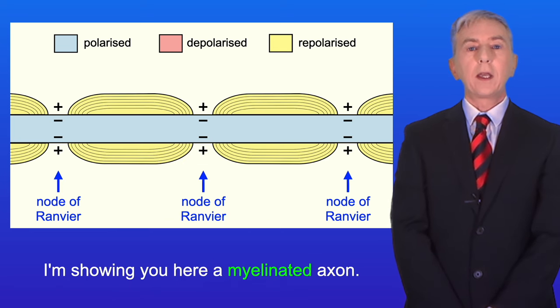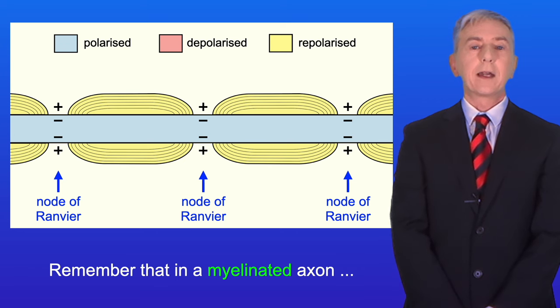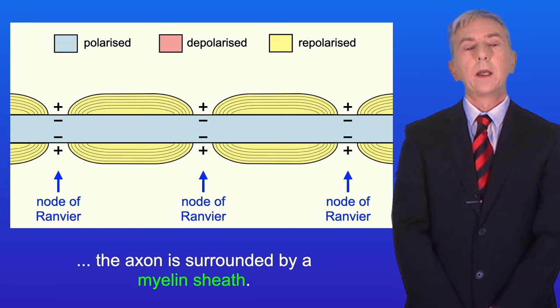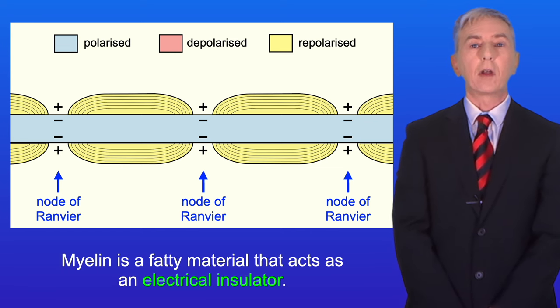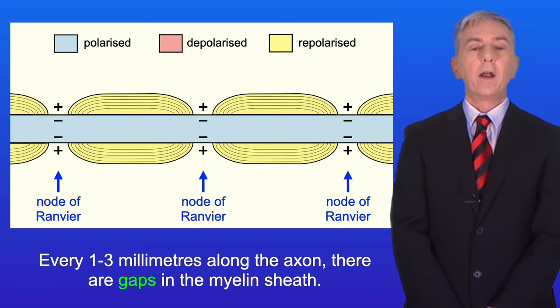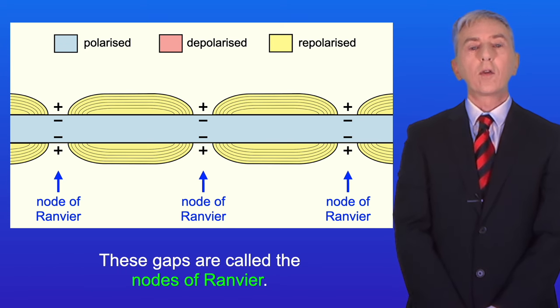Okay, I'm showing you here a myelinated axon. Remember that in a myelinated axon the axon is surrounded by a myelin sheath. Myelin is a fatty material that acts as an electrical insulator. Every one to three millimeters along the axon there are gaps in the myelin sheath. These gaps are called the nodes of Ranvier.